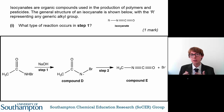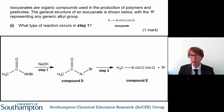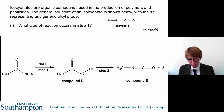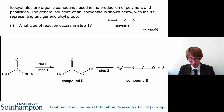That's what this video is for — it's all to get you thinking the right way about answering these questions, so you're using the concepts that you are aware of and applying them to new situations. Isocyanates are organic compounds that are used in the production of polymers and pesticides, and the general structure of one is shown there, with the R representing any generic alkyl group.